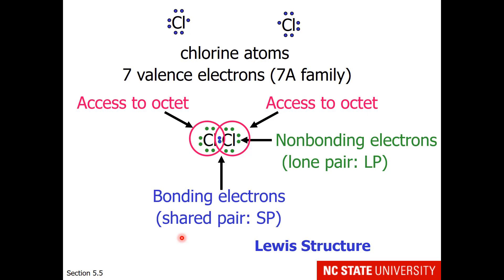This would be the Lewis structure. Now it's very common to actually take the two shared electrons and draw them as a line. Each line represents two shared electrons.